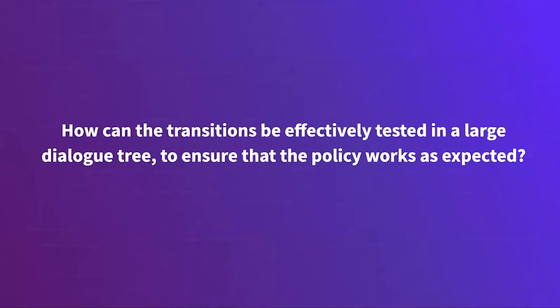Now I'll switch over to questions. From the pre-submitted questions: how can transitions be effectively tested in a large dialogue tree to ensure the policy works as expected? I hope I already answered that — the way to do it is to write tests, do cross-validation, and do model evaluation. Please check out those sections of the docs.